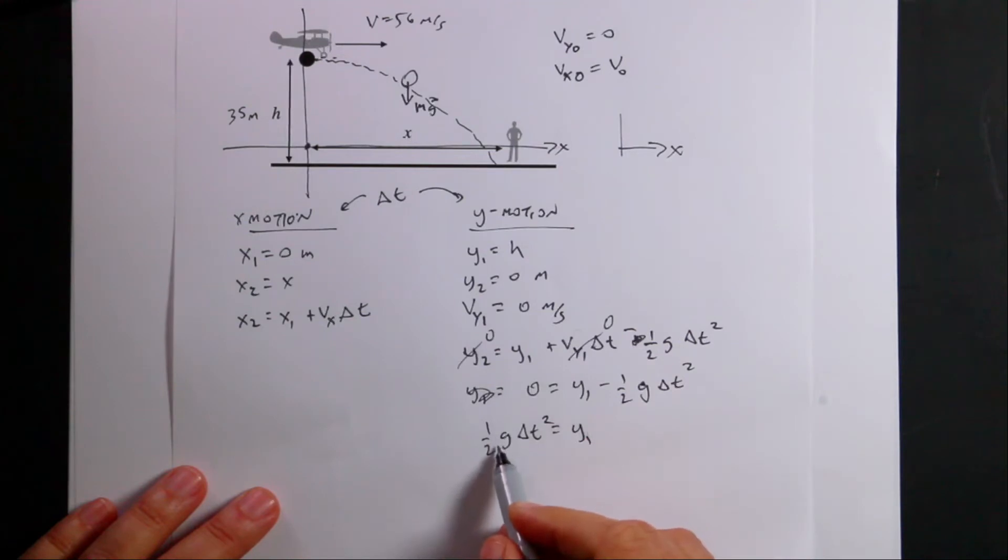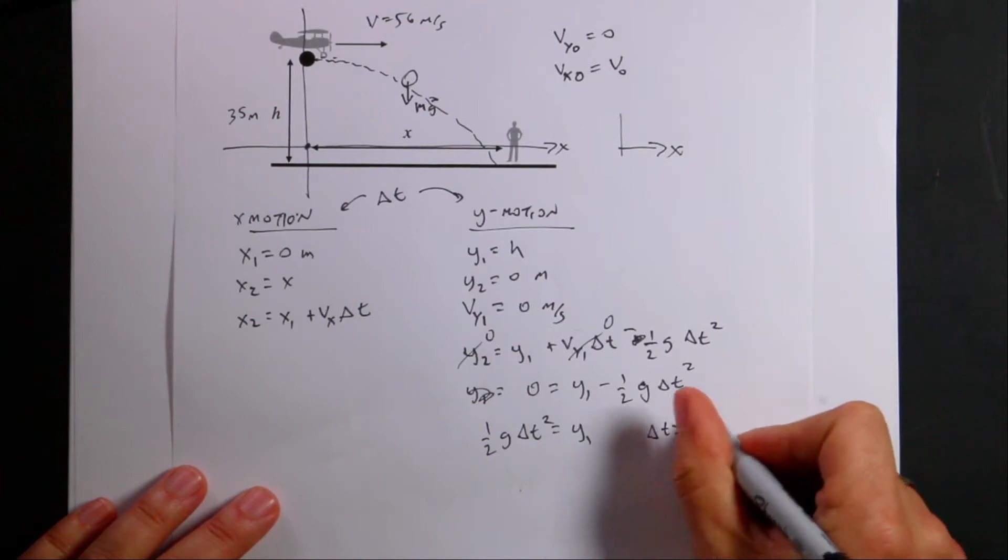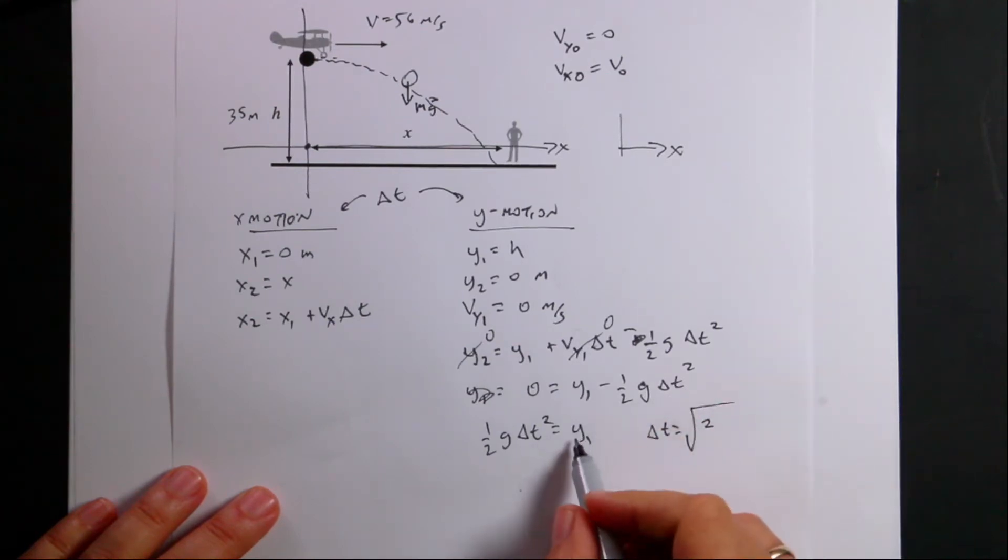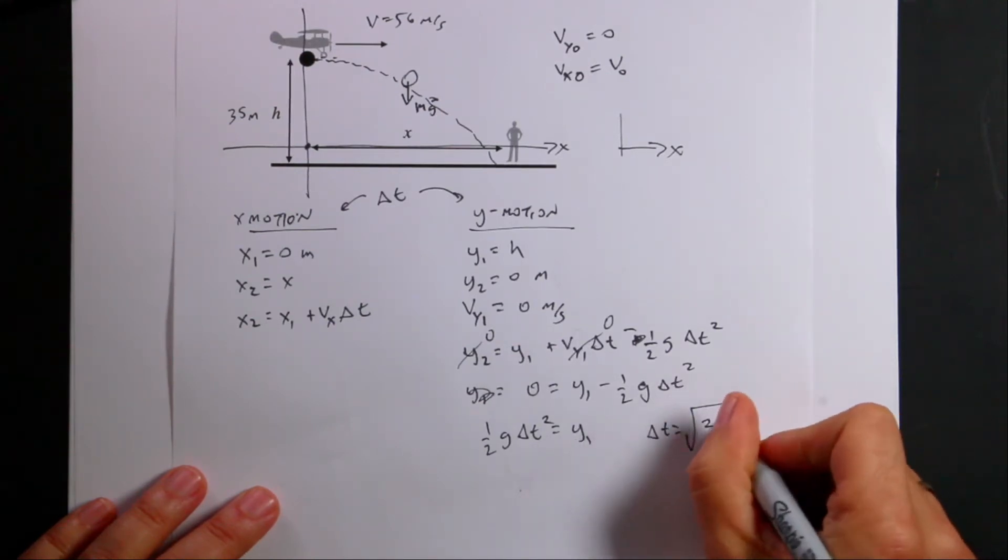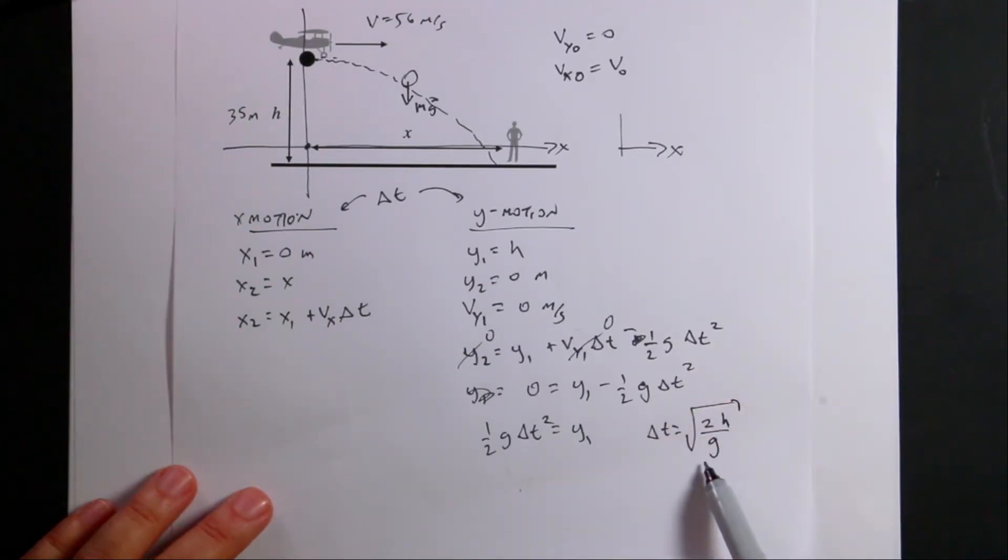I can add this term to both sides and I get one-half g delta t squared equals y1. I can multiply both sides by two and divide by g. And I get t equals the square root of two. And y1 is h. I'm going to put in that. So I get two h over g. Let's just double check real quick. Remember, g has units of meters per second squared. And that's meters. So I get meters divided by meters. Those cancel. And then I get one over one over seconds squared is second squared. And I take the square root, I get seconds. So this gives me the right units.